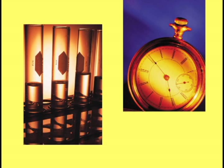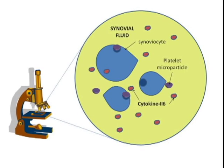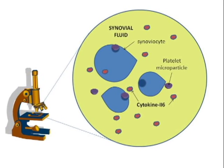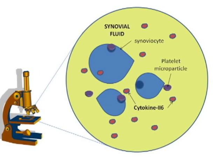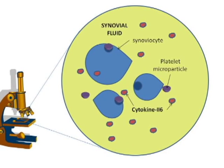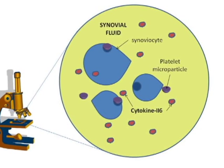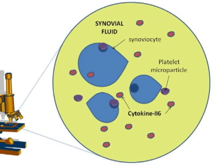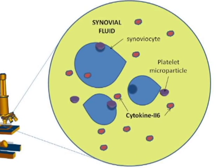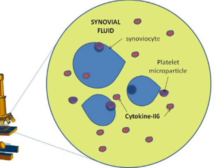These samples were allowed to sit in a solution containing platelets with the marker, in hopes of observing an interaction. Again, using a high-powered microscope and the proper lighting, the team observed microparticles attached to the synoviocytes and a high amount of cytokine 2-6 protein, suggesting that the microparticles stimulate its production.